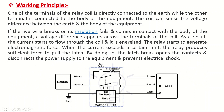Working principle of Voltage ELCB. One terminal of the relay coil is directly connected to the earth while the other terminal is connected to the body of the equipment. The coil senses the voltage difference between the earth and the body of the equipment. If the live wire breaks or its insulation fails and contacts the equipment body, a voltage difference appears across the coil terminals. As a result, current flows through the coil and it is energized, generating electromagnetic force. When the current exceeds a certain limit, the relay produces sufficient force to pull the latch, opening the contacts and disconnecting the power supply, thereby preventing electrical shock.